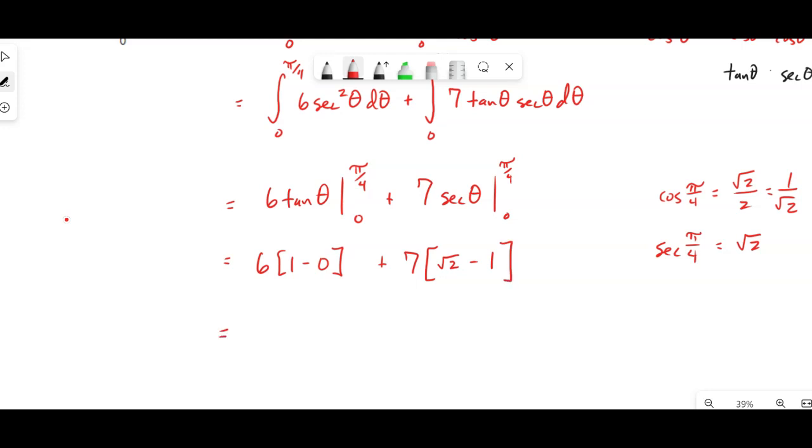All right, so here we're going to distribute through, we get six, here we get a positive seven square root of two, and then seven minus one is negative seven. So this is six minus seven is negative one, so this is seven square root of two minus one. That is the area underneath this curve for this definite interval.